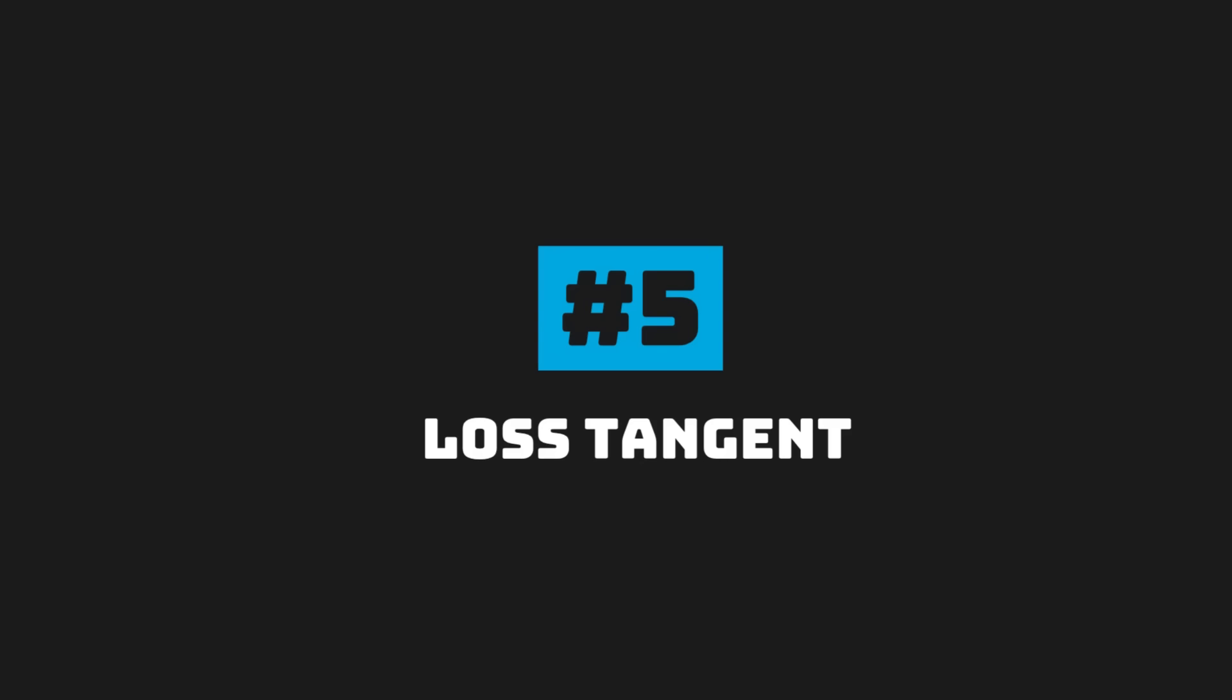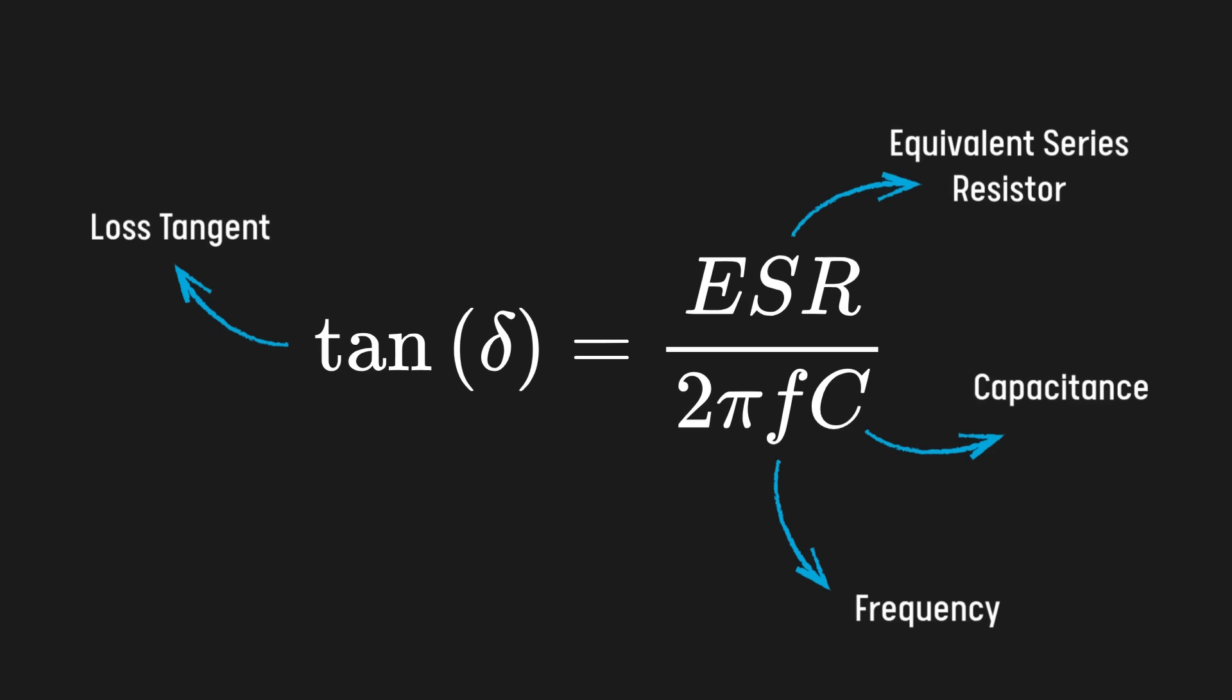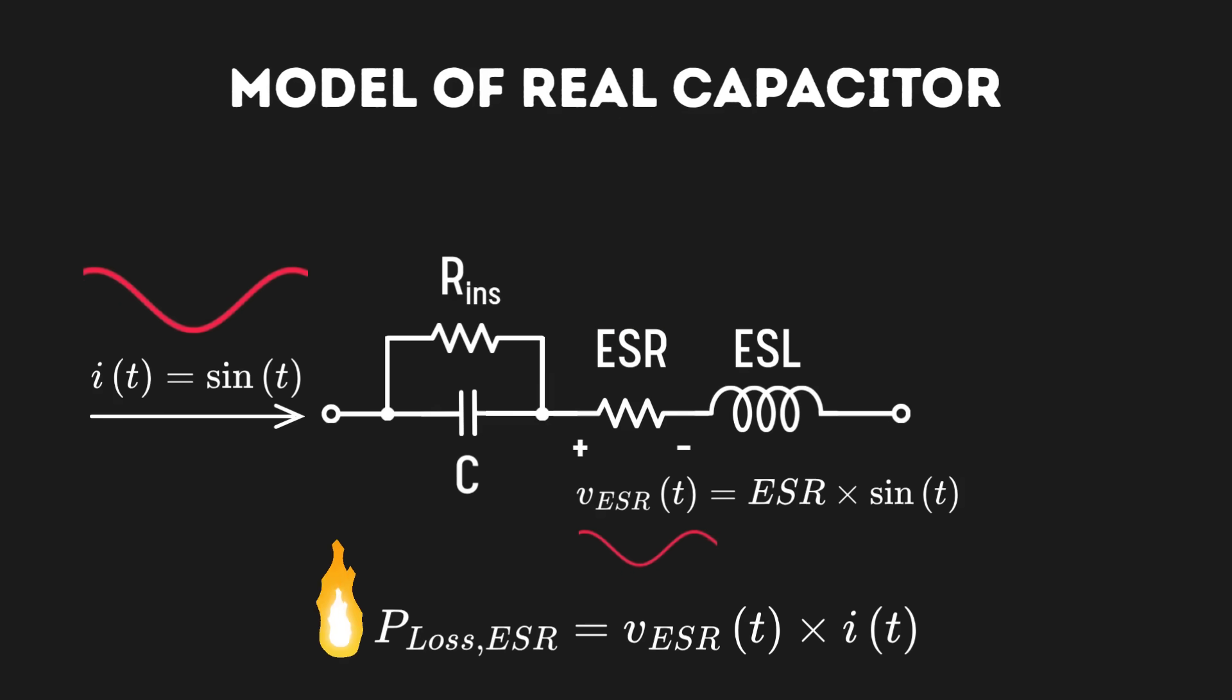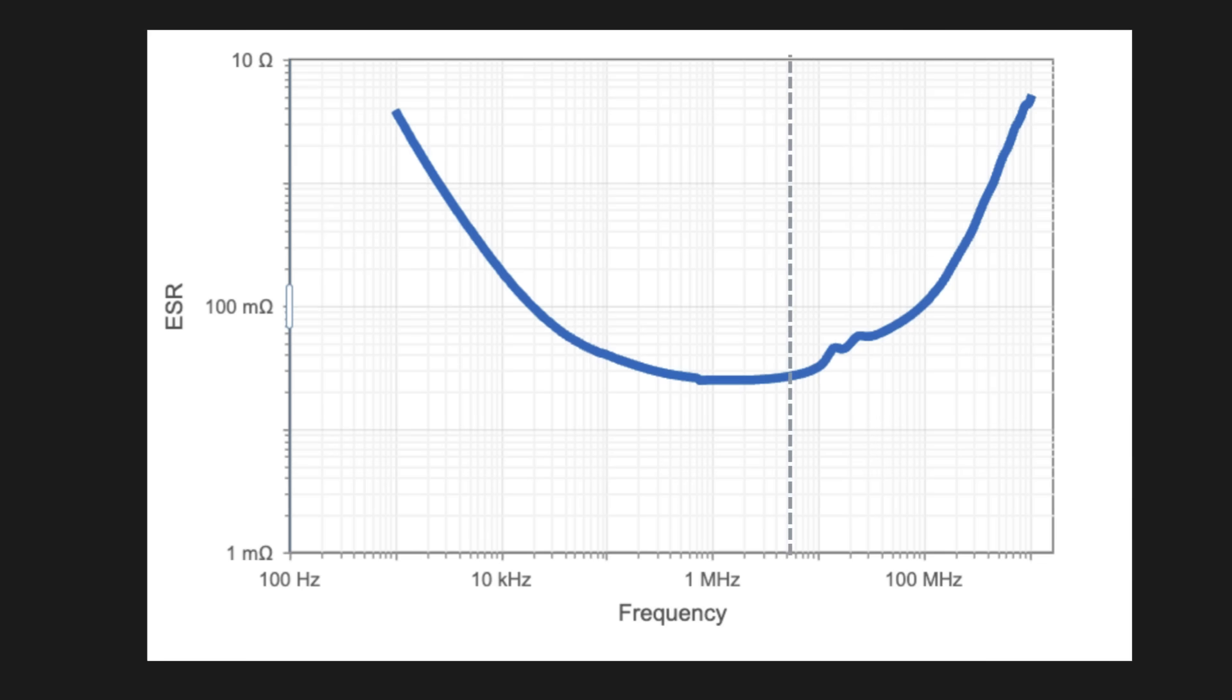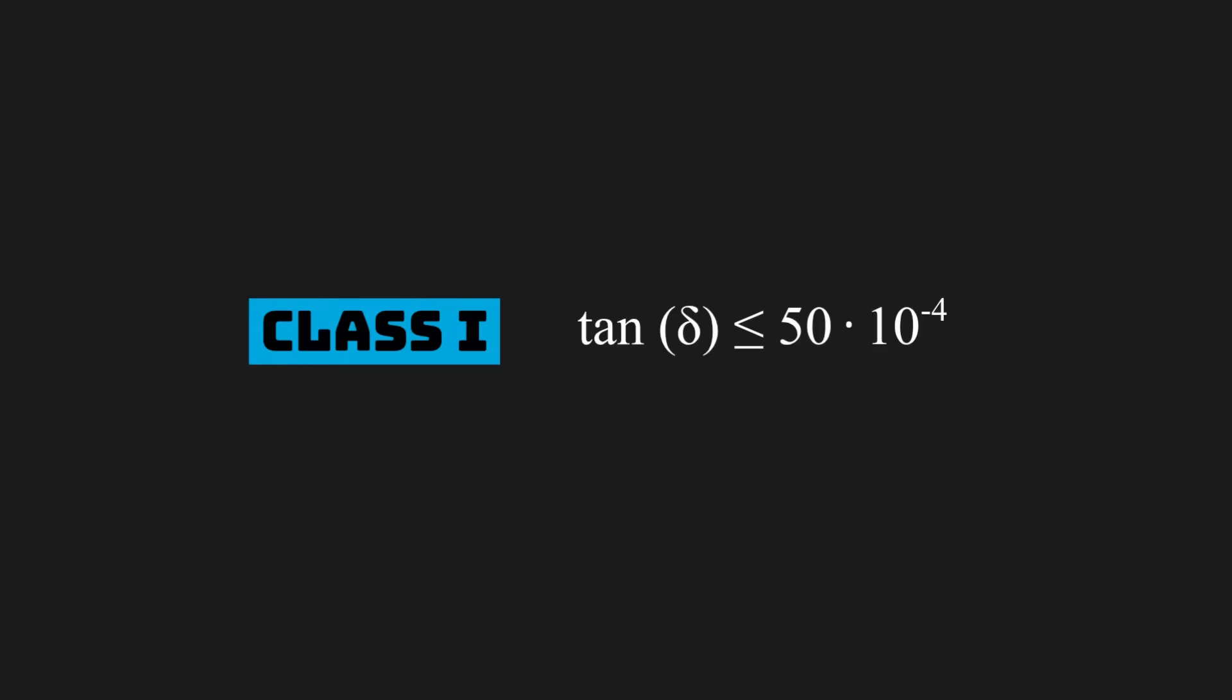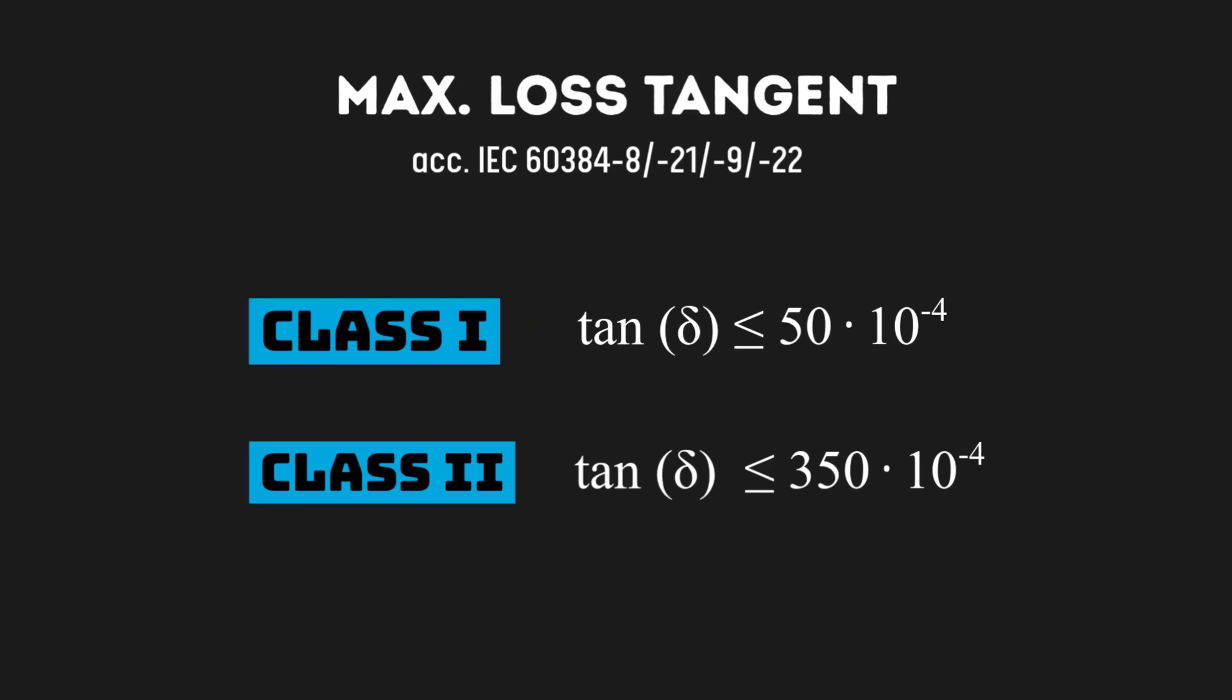The other parasitic element comes from the loss tangent, one way of representing the parasitic resistance value as a function of their capacitance. ESRs will create voltage ripples across the capacitor with AC currents flowing through it, and just like a resistor, it will also generate heat. Ceramic capacitors present a very low loss tangent, which allows for large AC currents with little heat dissipation. Class 1 capacitors have lower limits for their loss tangent, usually an order of magnitude lower than class 2.